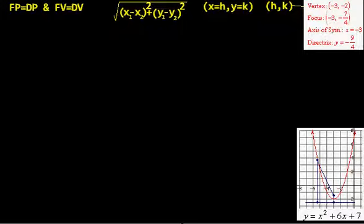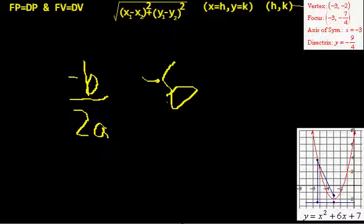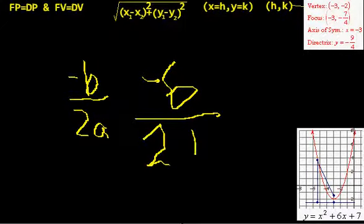Axis of symmetry is minus b over 2a, so that's going to be minus 6 over 2 times 1, which is negative 3.